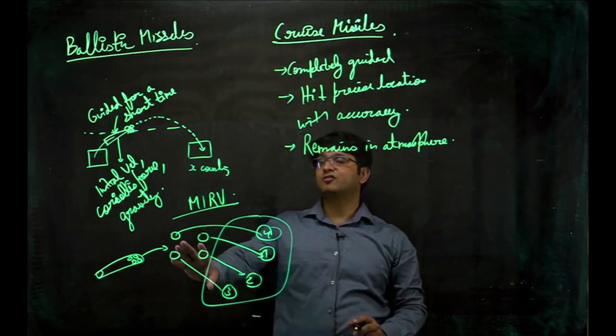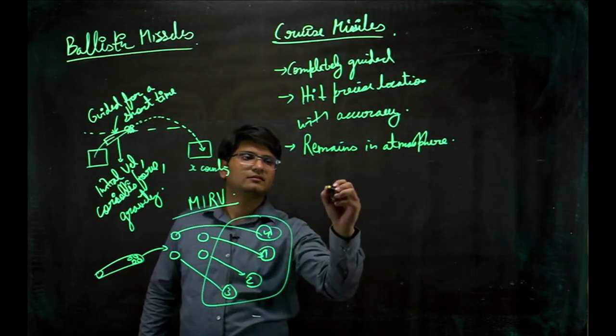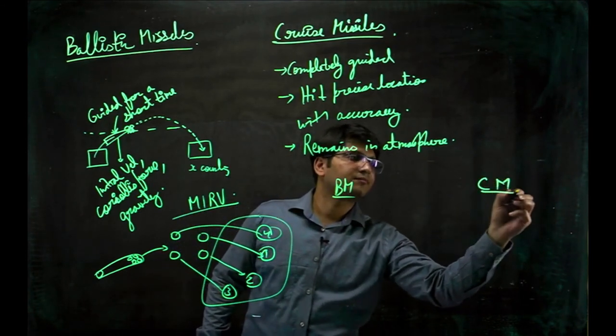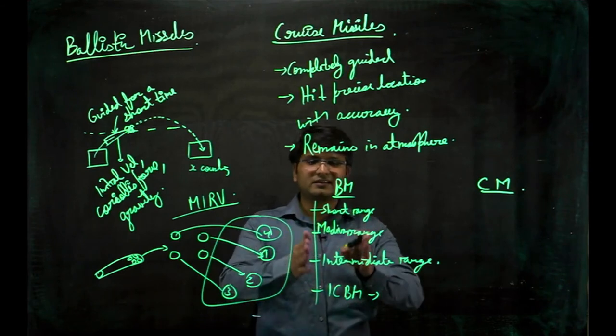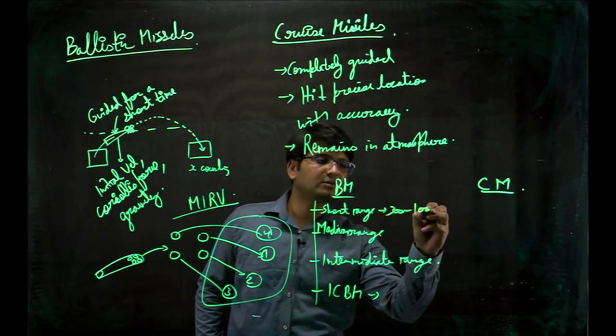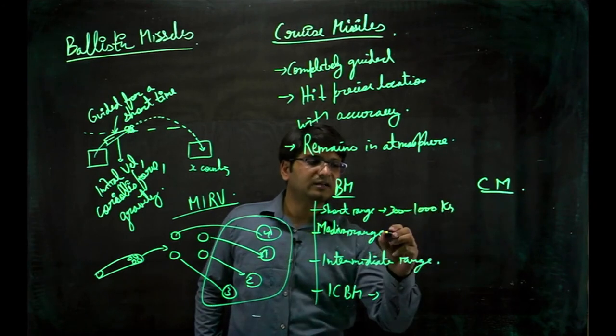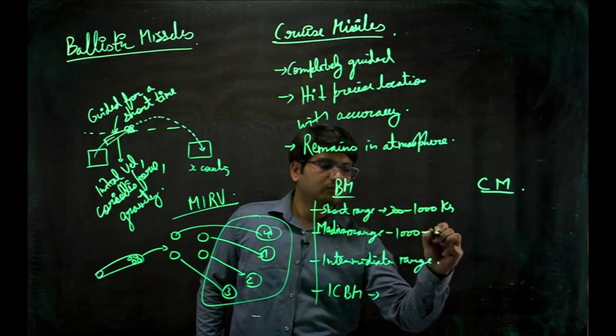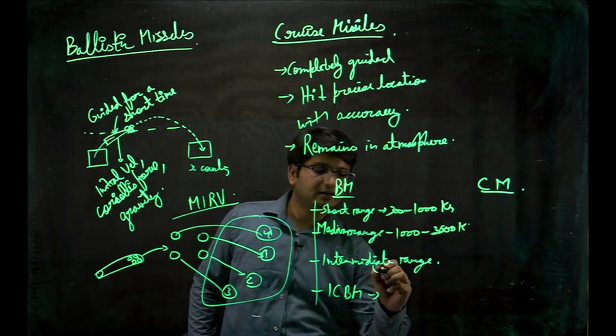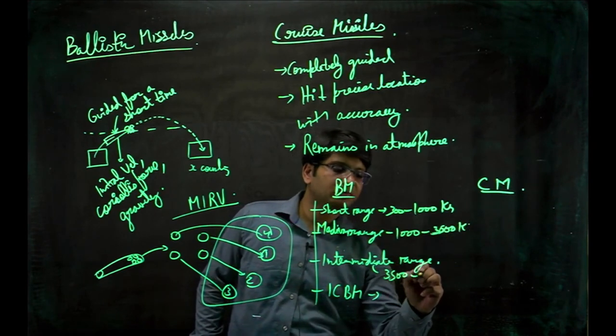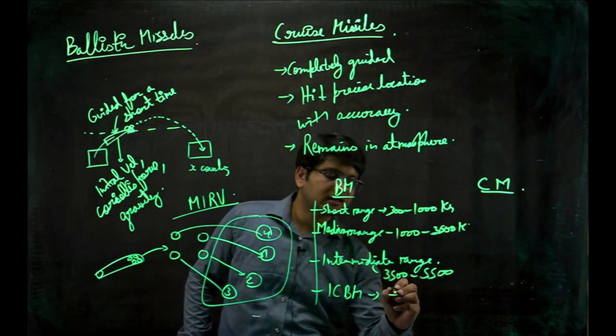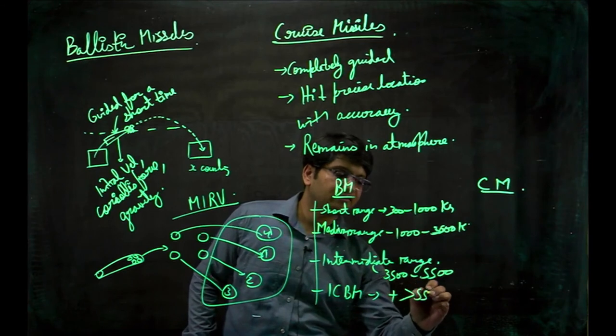Now various types of ballistic missiles. These are the various types of ballistic missiles: short range, range is 300 km to 1000 km; medium range, 1000 km to 3500 km; intermediate range, 3500 km to 5500 km; and intercontinental ballistic missiles, range more than 5500 km.